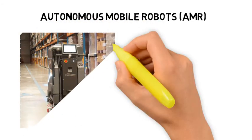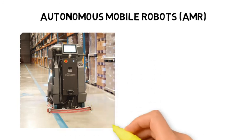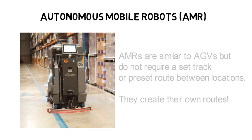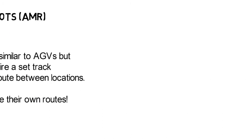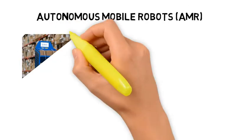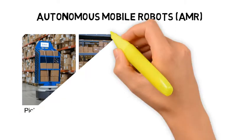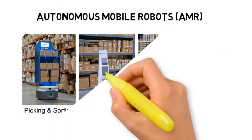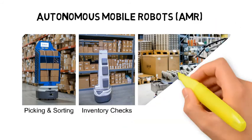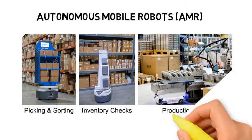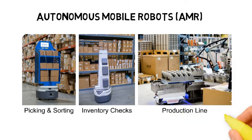Autonomous mobile robots, or AMRs, are similar to AGVs but do not require a set track or pre-set route. They create their own routes based on inbuilt maps and real-time data collected from the surrounding environment through onboard sensors. In the warehouse, AMRs can support picking and sorting to cartons and totes, and carry out inventory checks from up to 25 feet away using RFID sensors and scanners, improving inventory accuracy. They can be deployed in supermarkets such as Walmart to scan store shelves rapidly and provide near real-time updates. In manufacturing, they can be integrated into a production line running 24/7 to move materials seamlessly, accurately, efficiently and safely.